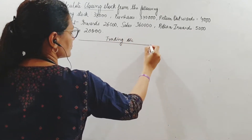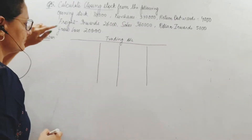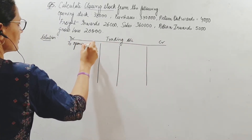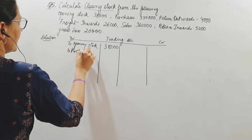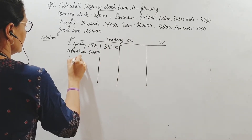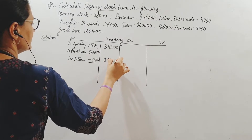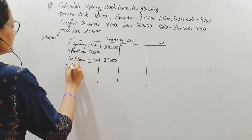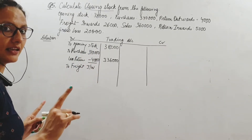If I prepare the trading account, where do you think I should put opening stock? Obviously on the debit side. So I write here: opening stock of 38,000. We have purchases and purchase return also — 3,40,000 is purchases, purchase return outward is 4,000, so net purchases is 3,36,000. Opening stock plus net purchases plus direct expenses — freight inward, if it is inward it is direct, outward it is indirect — so inward I take here in the trading account.